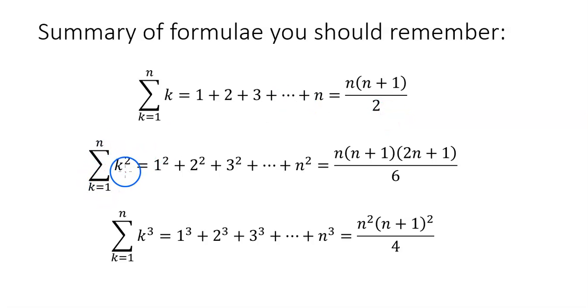The sum from k equals 1 to n of k squared, we figured out that's equal to n times n plus 1 times 2n plus 1 divided by 6.